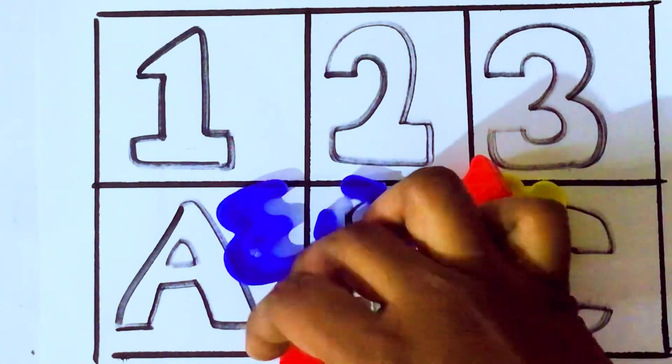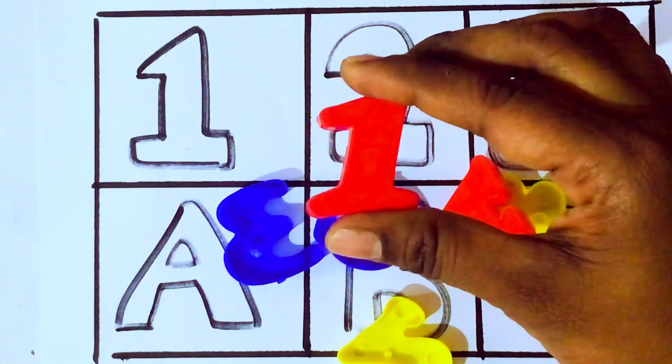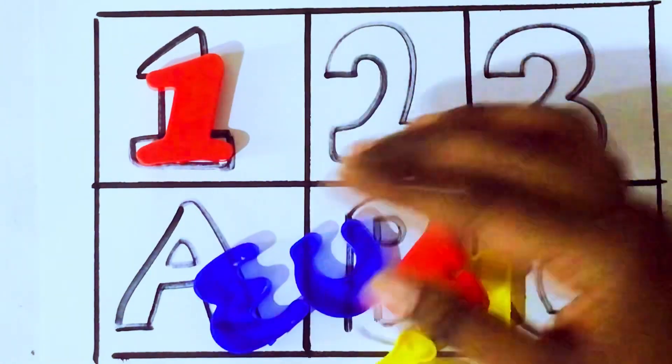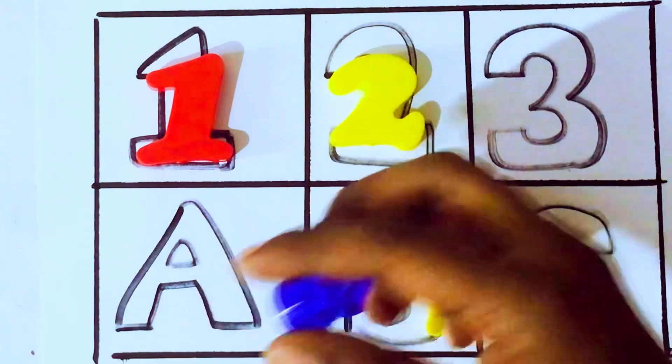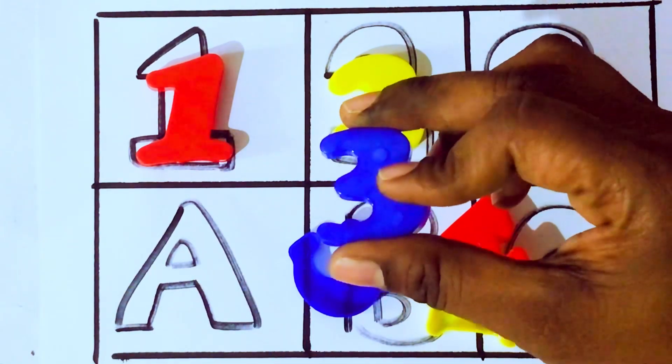Which number kids? 1, O, N, E, 1. Next 2, T, W, O, 2. Next 3, T, H, R, E, E, 3.